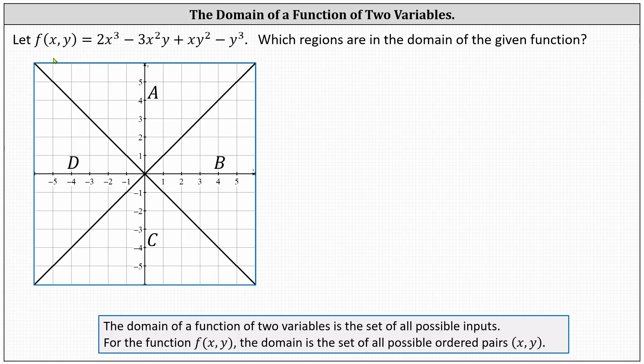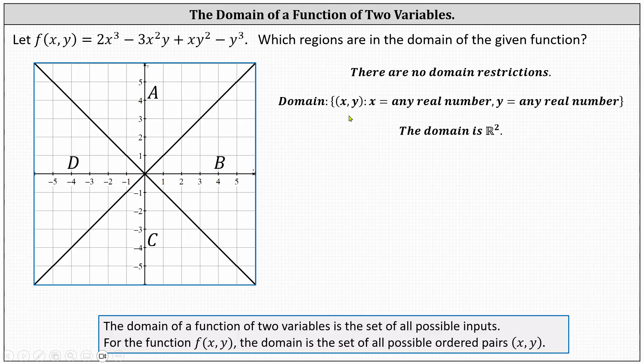In this case though, because the domain consists of all the ordered pairs x comma y, we can state the domain several ways. We can say the domain has no restrictions. We can say the domain is x comma y, where x is any real number and y is any real number. Another common way would be to state the domain is r2, where r2 is all the points in the xy plane.